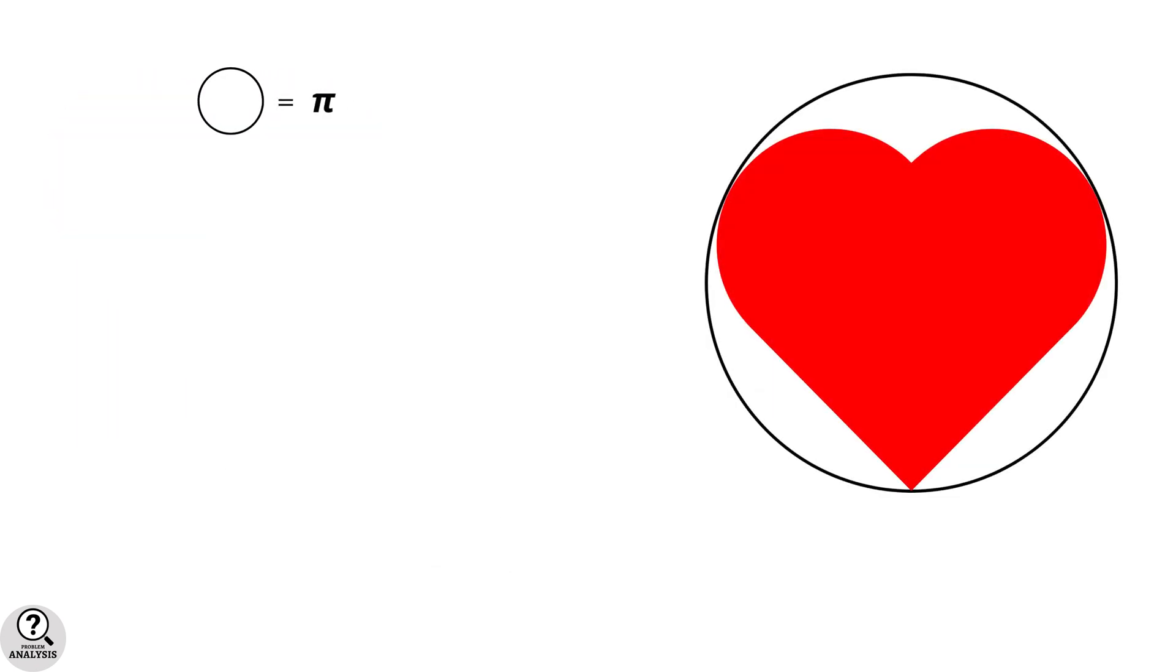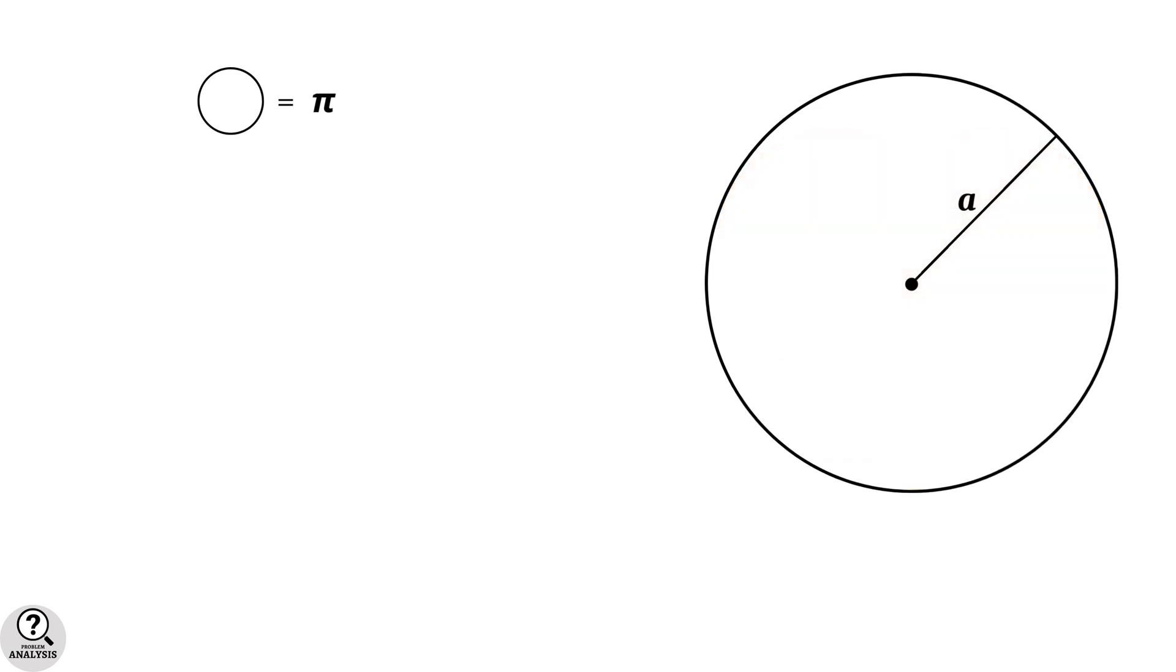Now check for any numerical data which are immediate from the given information. It is given that the area of the circumscribed circle is pi square units. Suppose the radius is a. Then area is pi a square which is equal to pi. That is a square equal to 1 and hence radius a equal to 1 unit.